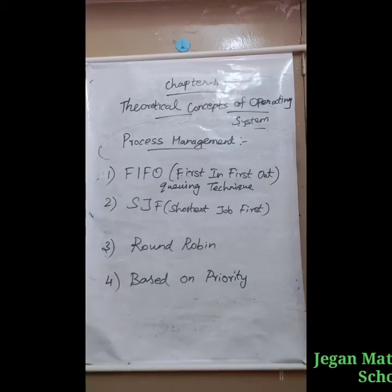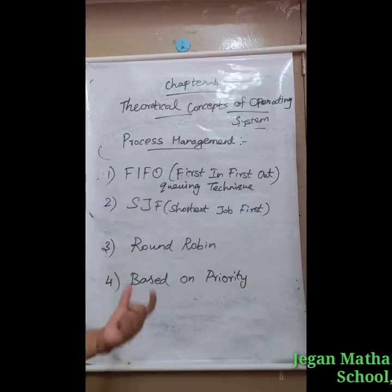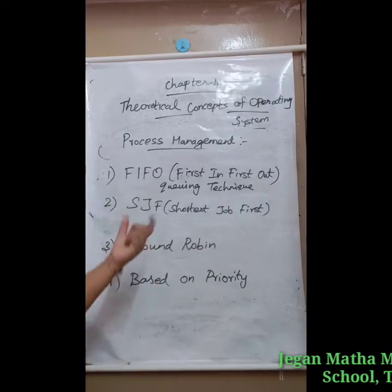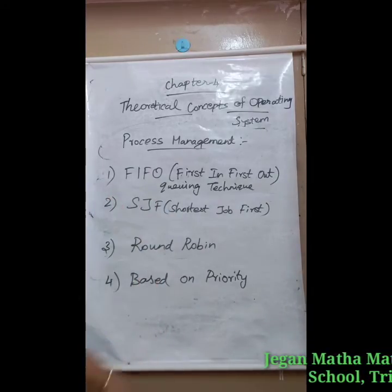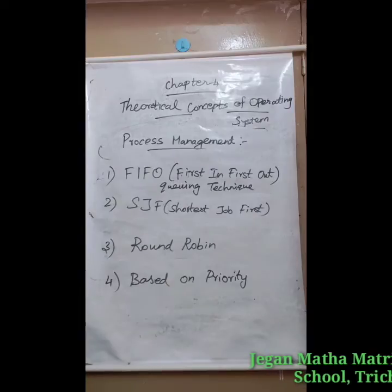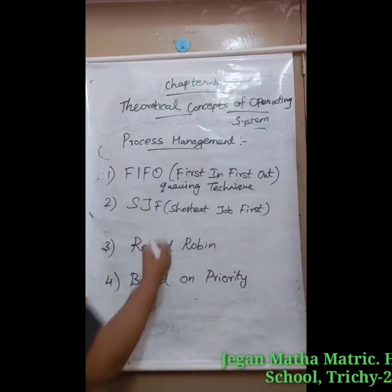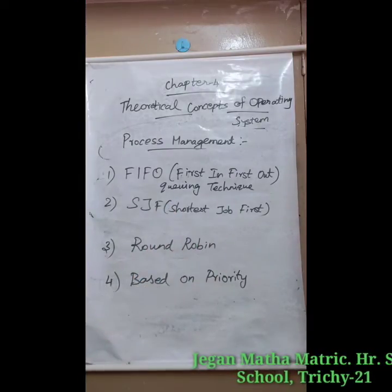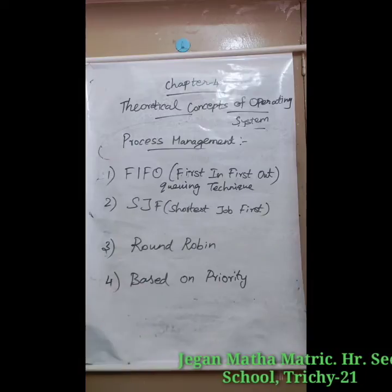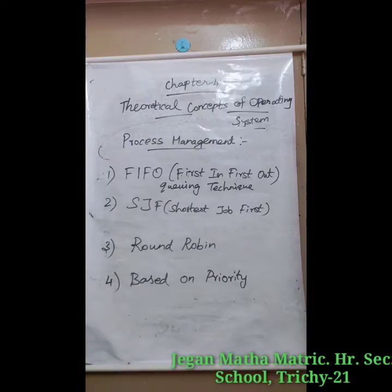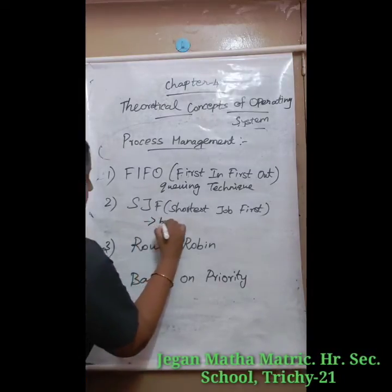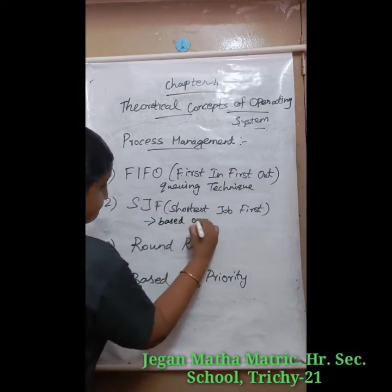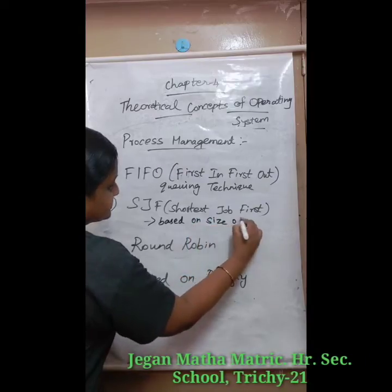Followed by next and so on, the processes are executed in order of the queue. That is the FIFO, First In First Out method. The second one is SJF — Shortest Job First. This algorithm is based on the size of the job being executed.